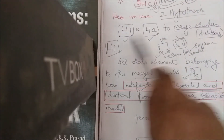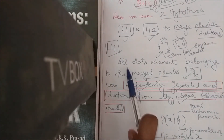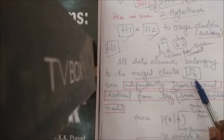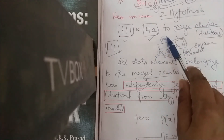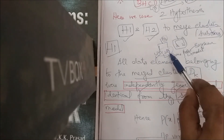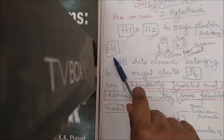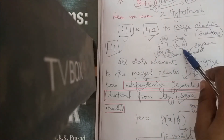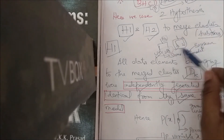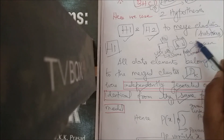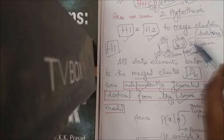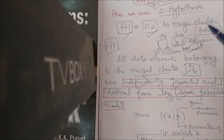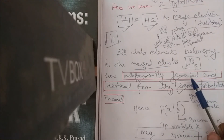H1 states that all data elements belonging to the merged cluster dk must satisfy a condition. When you have di and dj and want to merge them into dk, H1 explains under what condition you may do so. The idea is: why merge A and B but not A and C? In HAC it is based on the distance matrix; in BHC it is based on the probabilistic model.